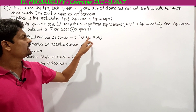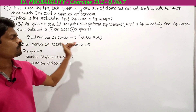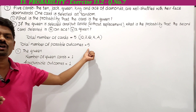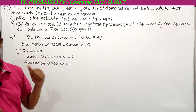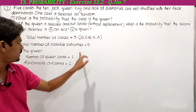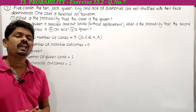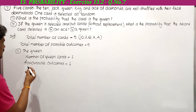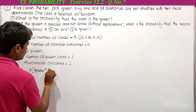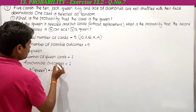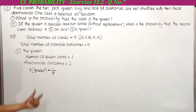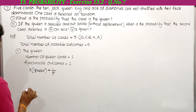The five cards are: 10, jack, queen, king, and ace. Therefore total number of possible outcomes equals 5. If a card is selected at random from the 5 cards, the number of queen cards is only 1. Therefore favorable outcomes for the event queen is 1. Probability of queen equals favorable outcomes divided by total possible outcomes = 1 by 5.